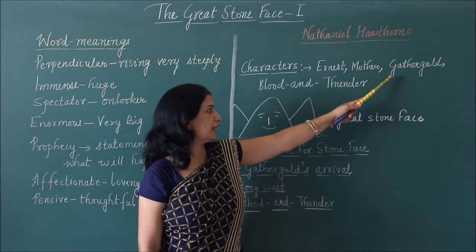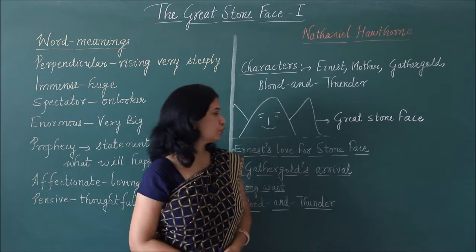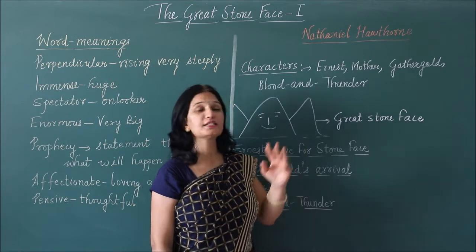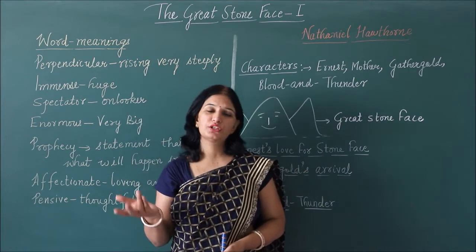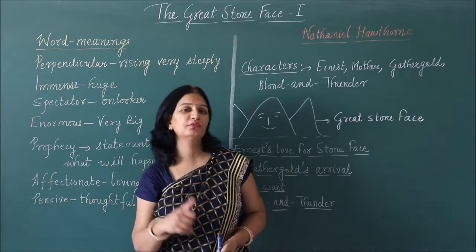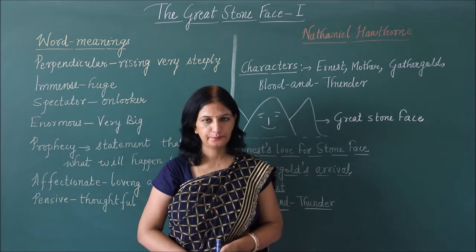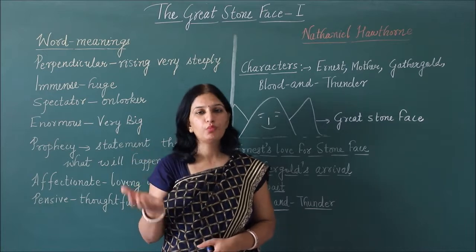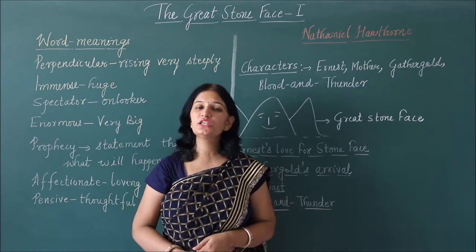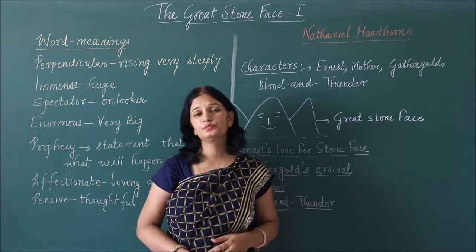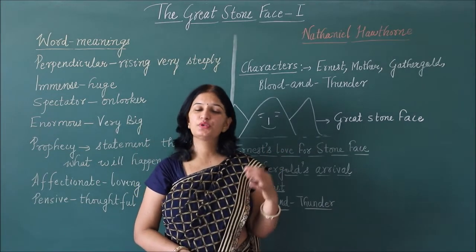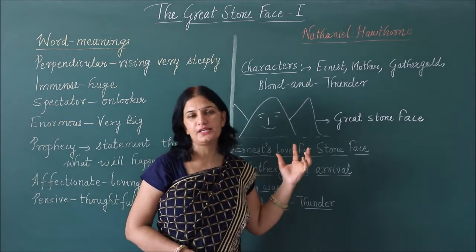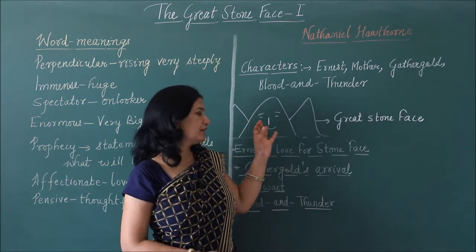Characters of the story: Ernest, his mother, Gather Gold, and Blood and Thunder. In the beginning of the lesson, Ernest and his mother were sitting outside their house, continuously gazing at the great stone face. Ernest's mother told him that according to the old prophecy, a man would be born bearing the likeness of the great stone face. After that, Ernest became very curious and wanted to know when the man would be born, and he started looking continuously towards the great stone face. Gradually, the great stone face became a teacher for Ernest, and he was developing qualities of kindness influenced by it.